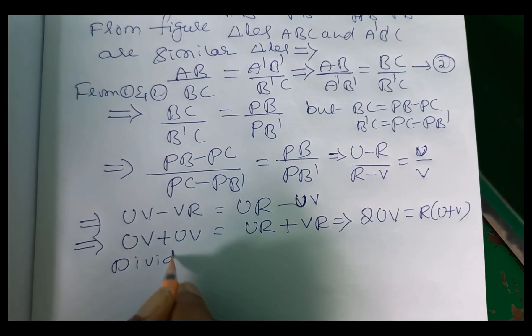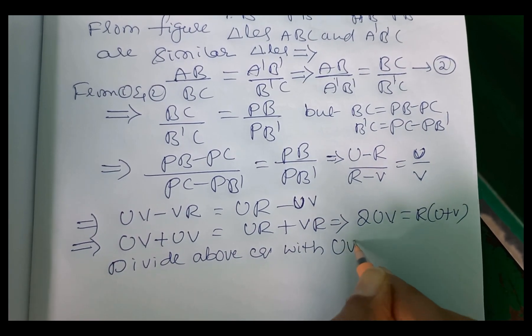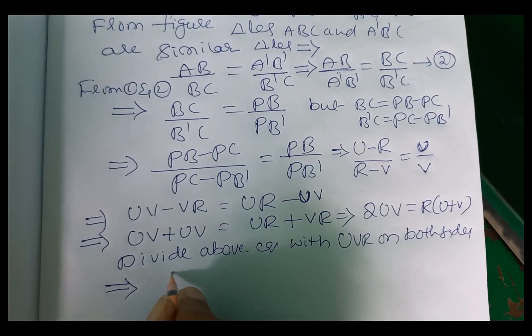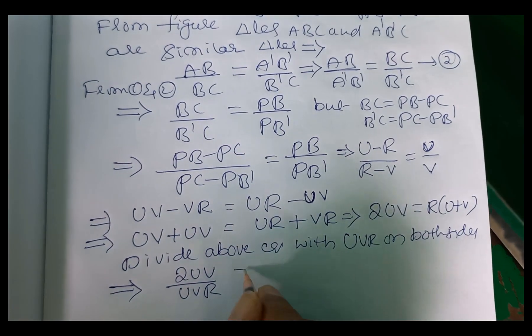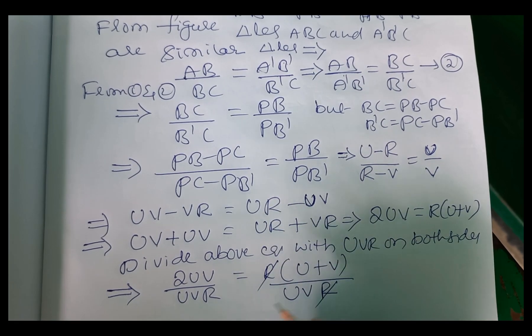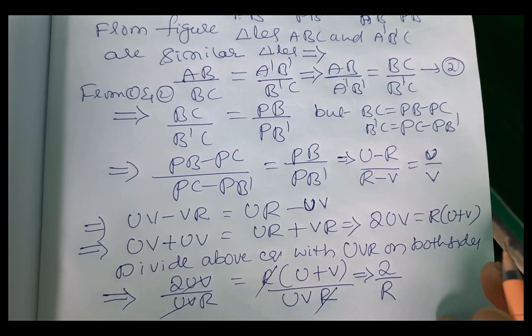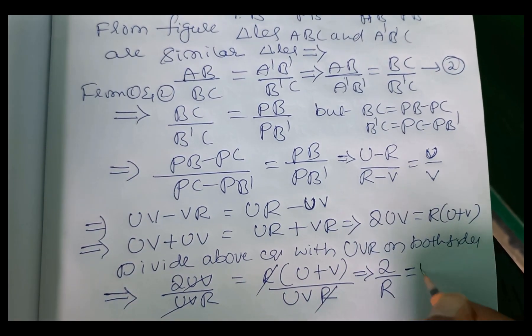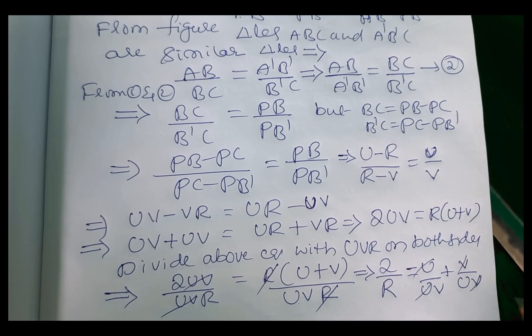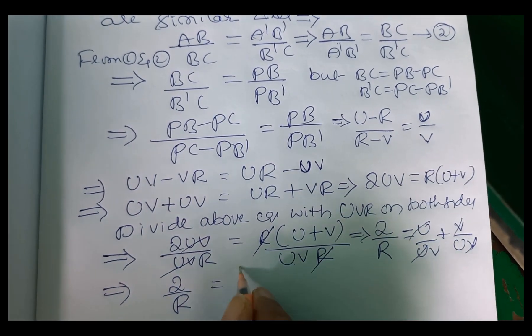Divide the above equation with UVR on both sides. On both sides, divide. So then this will be 2UV by UVR equal to R into U plus V by UVR. So R, R cancel. UV cancel. This implies 2 by R, this is 2 by R equal to U plus V by UV. Means that U by UV, denominator separate, plus V by UV. U, U cancel, V, V will be get canceled. So this implies 2 by R is equals to 1 by V plus 1 by U.